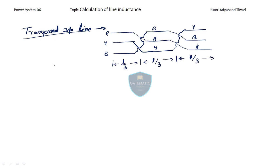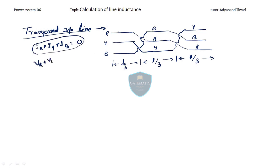Due to transposition, all effects are cancelled out. In the first section IR current has Y as middle conductor, next section R is middle, and last section B is middle, so IR + IY + IB = 0 and balance is maintained. Similarly, in voltage: B phase has more potential in the first section, Y in the second, and R in the third — it equally increases, maintaining balance. There is a formula to calculate inductance for the transposed line but not for the untransposed line.